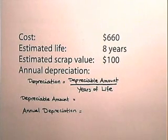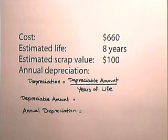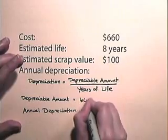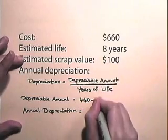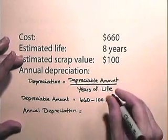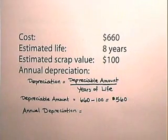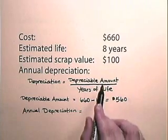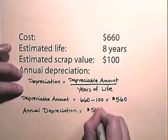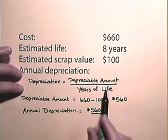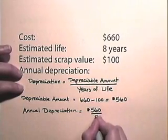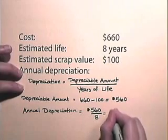Depreciation is the depreciable amount divided by years of life, and the depreciable amount is the cost minus the scrap value. So our depreciable amount here will be $660 subtract the scrap value of $100, giving us $560. So our annual depreciation will be $560 divided by the years of life, which is 8 years, giving us $70 per year.